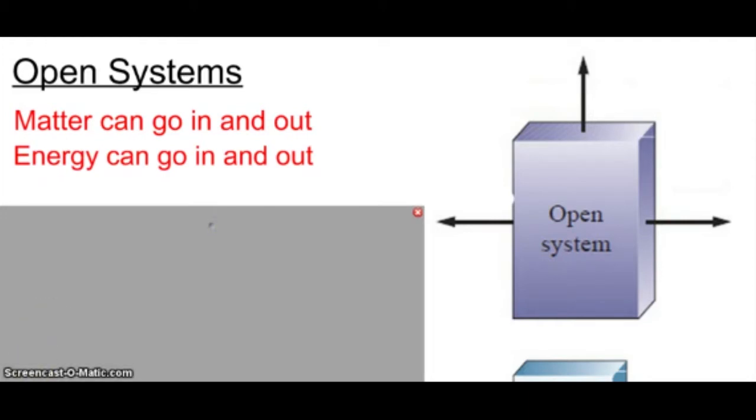And some of the vocab you need to know here, matter can go in, energy can go in or out. When it's going in, it's called an input. I'm not going to give you a definition, but you need to know an input is when matter or energy is going in, and output is the opposite. The systems are outputting matter or energy.